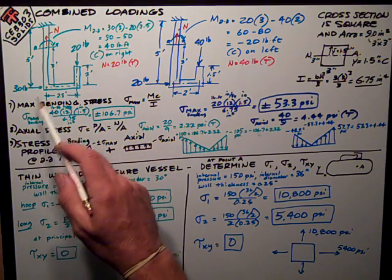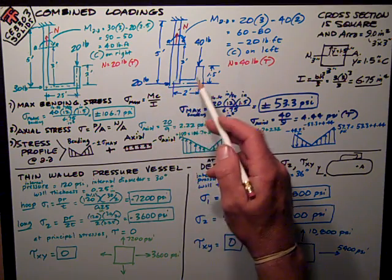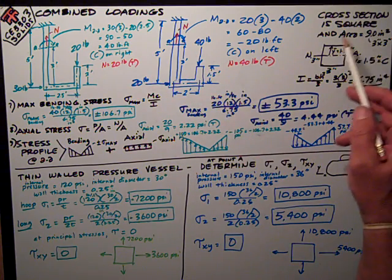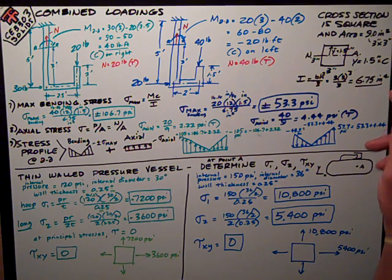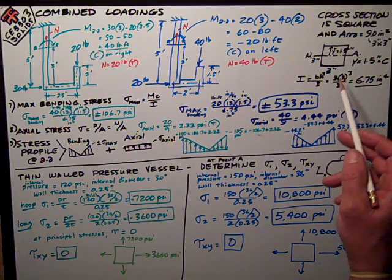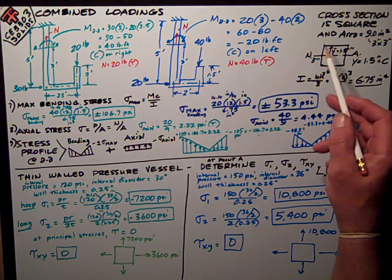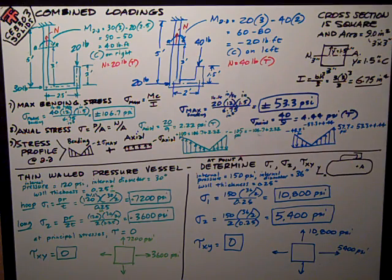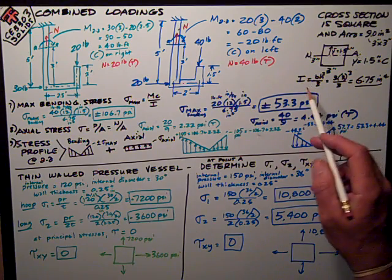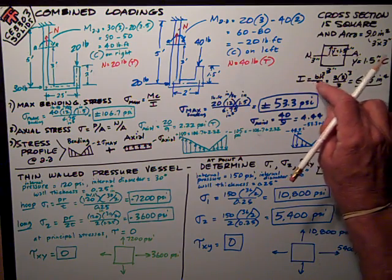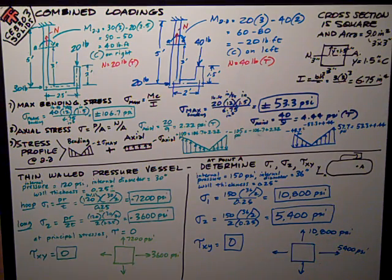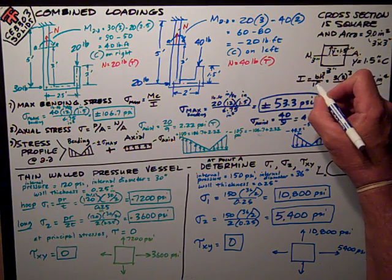First, we were given these loads and we were told the cross-section is square and the area is 9.0 inches squared. That means by simple math that it's three by three. So Y for our bending calculation is 1.5 inches — half of its height — the distance from the neutral axis to the extreme fiber. It's also C in that formula MC over I. I is just BH cubed over 12, so it's 6.75 inches⁴.